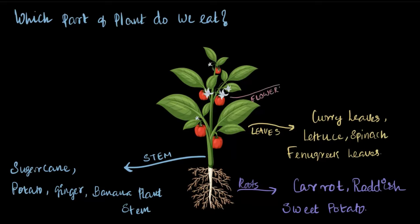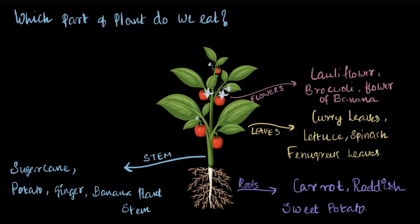Let us see some examples of flowers that we consume as food. Of course, cauliflower — the flower is in its name itself. Cauliflower is the flower of a plant that we consume as food. Broccoli and the flower of a banana plant are also consumed as food.